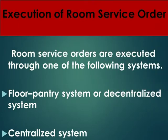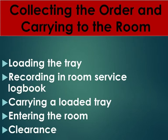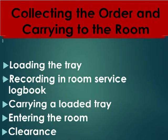Execution of room service order. Room service orders are executed through one of the following systems: floor pantry system or decentralized system; or centralized system. Collecting the order and carrying to the room involves: loading the tray; recording in the room service logbook; carrying the loaded tray; and entering the room, followed by clearance.